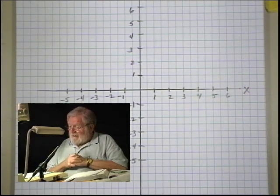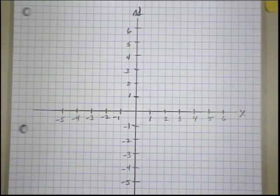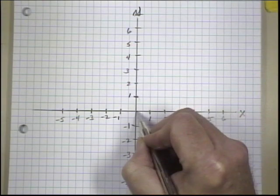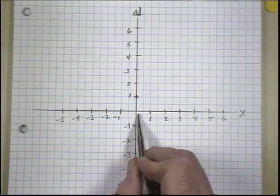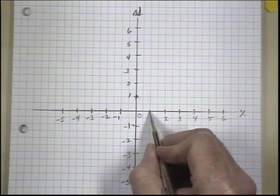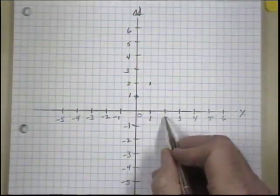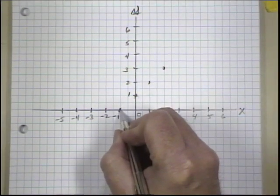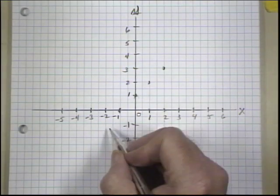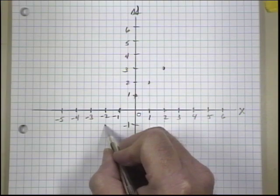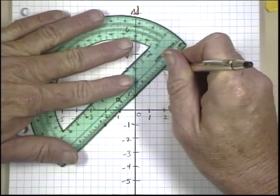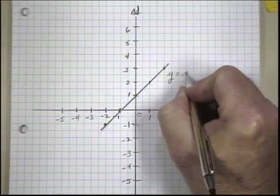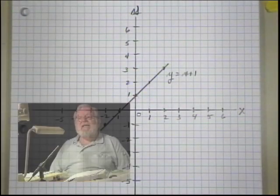Let's graph the first expression: y equals x plus 1. Our ordered pairs were x equals 0, y equals 1 — right there. x equals 1, y equals 2 — up here. x equals 2, y equals 3 — here. x equals negative 1, y equals 0 — here. And x equals negative 2, y equals negative 1 — here. If we draw a line through these points, we get a straight line. And we said that was a function — y equals x plus 1. Each x generates a unique y; it is a function.